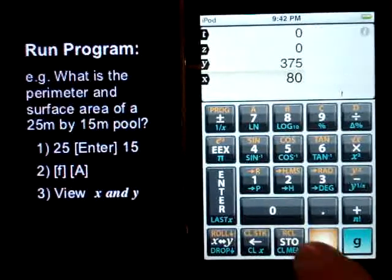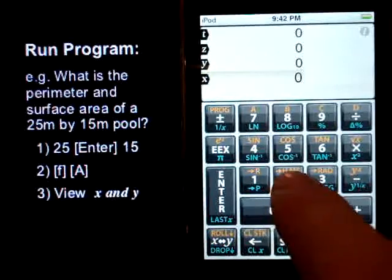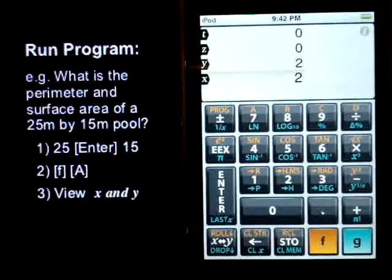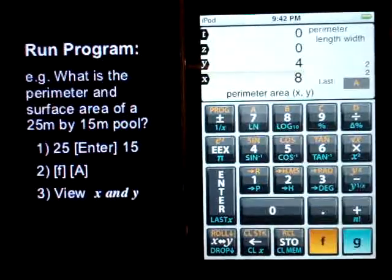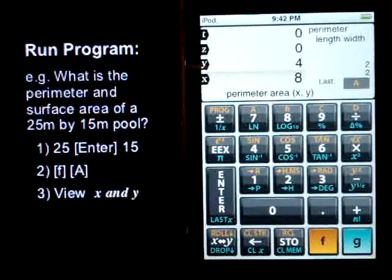Let's try a simple example. How about a 2 meter by 2 meter pool? That's more like a hot tub. F, A. That would be a perimeter of 8 and an area of 4.